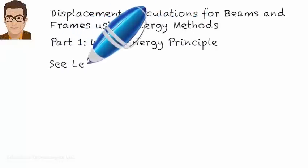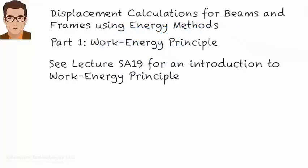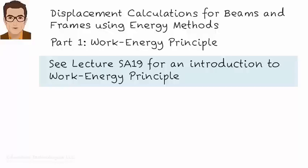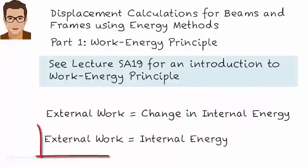In Lecture Essay 19, the Work Energy Principle was introduced and its application for calculating truss displacements was illustrated. In this lecture, I am going to examine the use of this principle for calculating deflections in beams and frames. Make sure you have reviewed the previous discussion before continuing. According to the Work Energy Principle, work done by applied loads equals the change in the internal energy of the structure. Assuming that the unloaded structure has zero stored energy, we can write: external work equals internal energy.